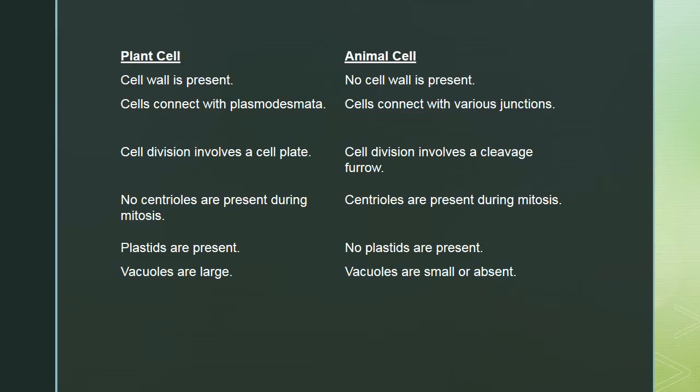Starting at the cellular level, what makes plants different from animals and bacteria? Plant cells have a cell wall whereas animal cells do not, and because of that they have plasmodesmata — basically tubes that go between two cells through the cell wall to allow cell-to-cell connection.